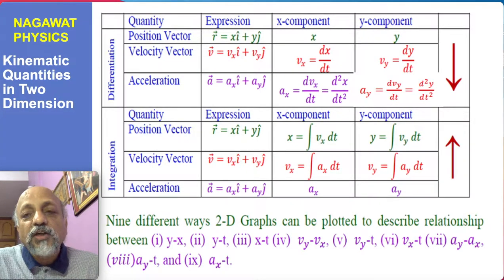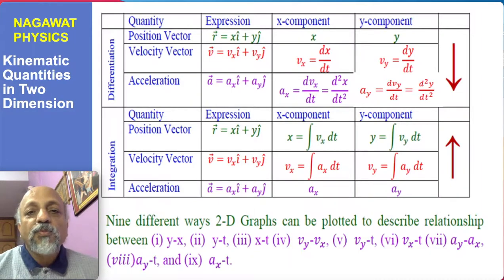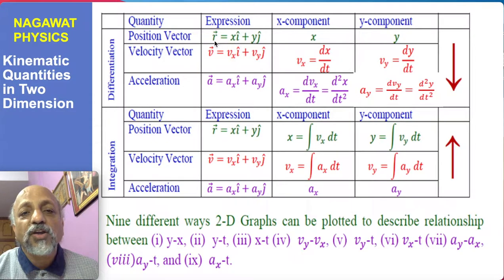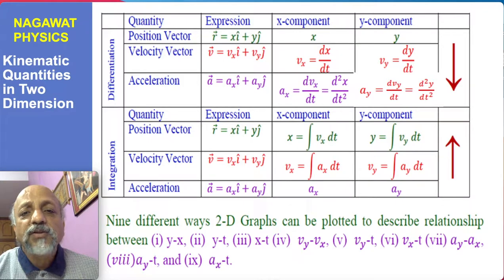Kinematic quantities in two dimensions, as discussed in the last talk, can be defined in the same manner as we defined kinematic quantities in one dimension but by generalizing to two dimensions. The position vector as a function of time for any particle in two dimensions is given by r vector = x î + y ĵ, where x and y are the projections of the position vector on the x and y axes respectively, or the coordinates of the particle's location in two-dimensional x-y space.